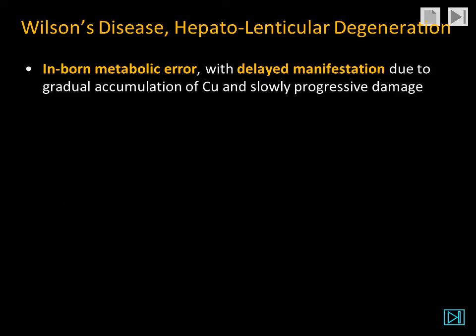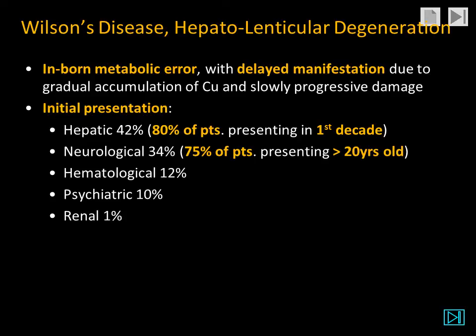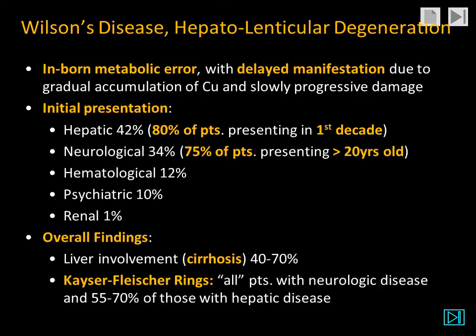This is an inborn error of metabolism, but it usually has a delayed manifestation due to the gradual accumulation of copper and toxicity, which is slowly progressive. The initial presentation in many patients is hepatic in about 80% of patients presenting in the first decade. However, the majority of patients who present over the age of 20 have neurological dysfunction. Hematologic, psychiatric, and renal dysfunction can also cause clinical presentation. Overall findings include cirrhosis in up to 70% of patients, and Kaiser-Fleischer rings have been reported in virtually all patients who have neurologic disease, and up to 70% of patients who have hepatic disease.